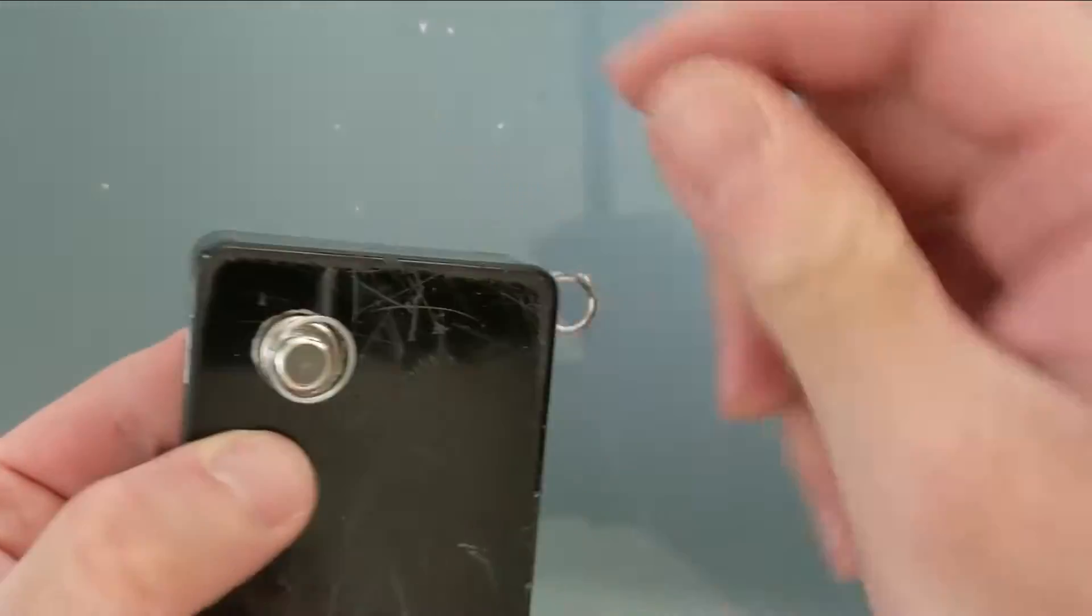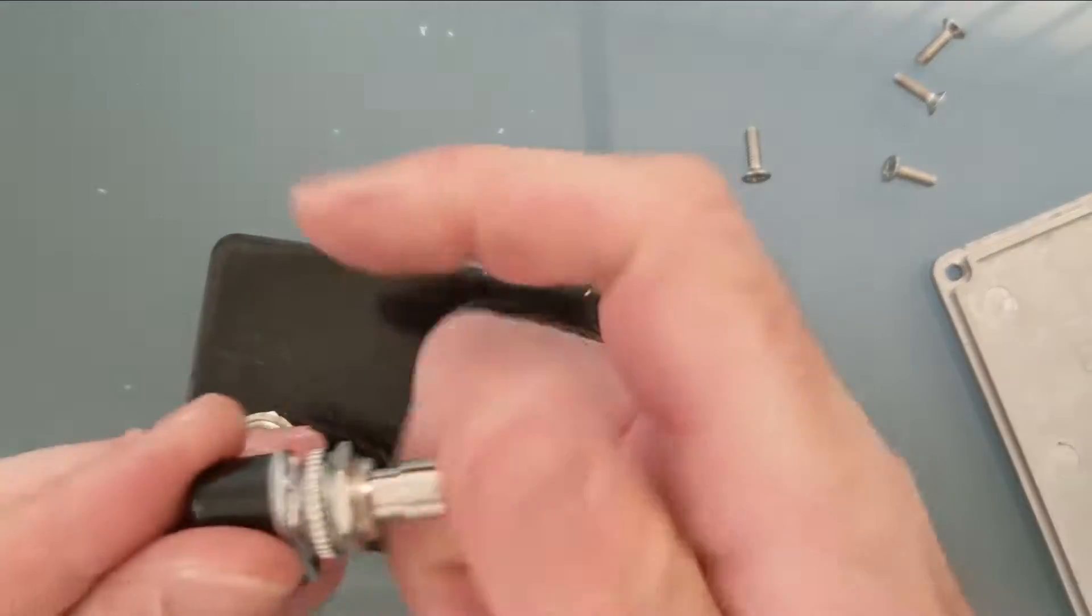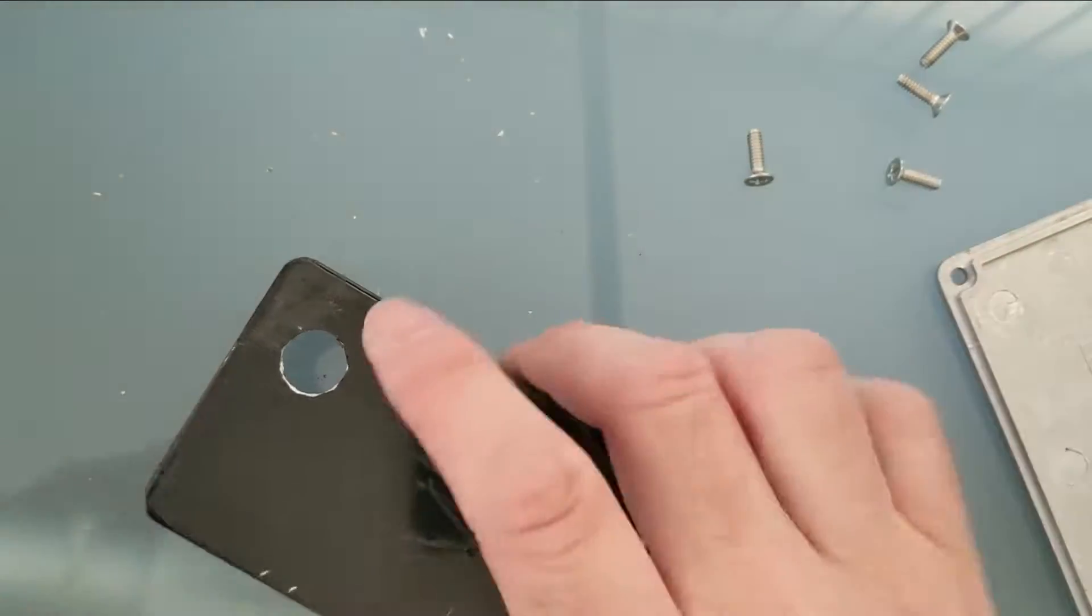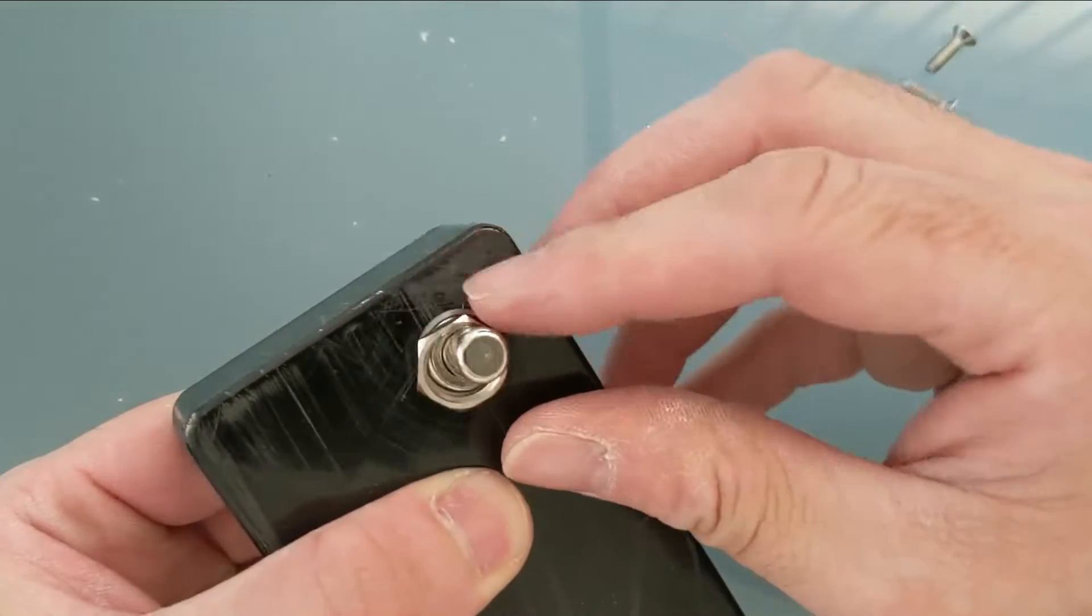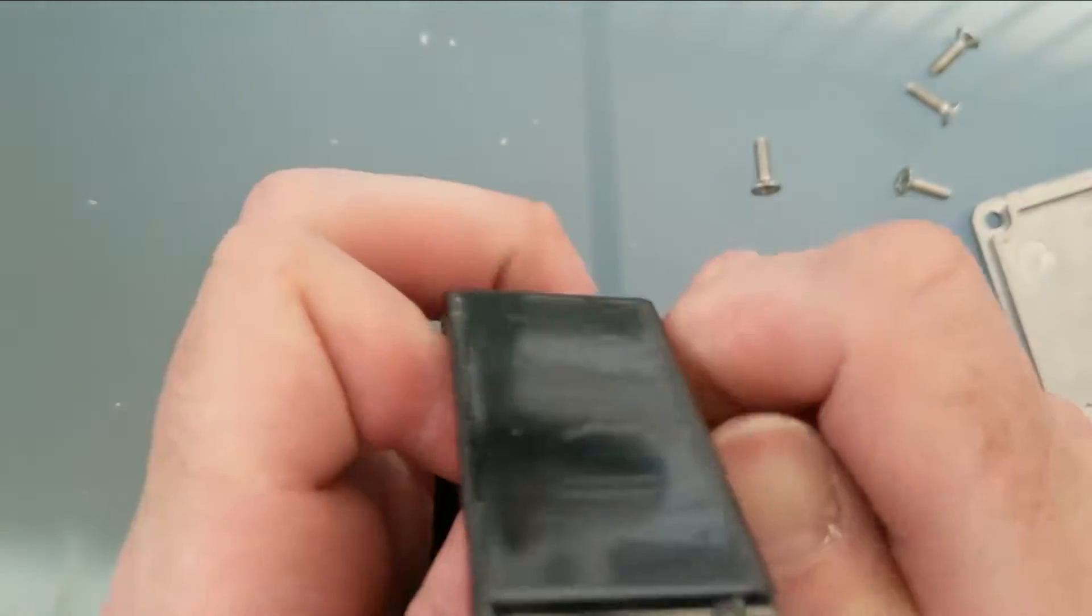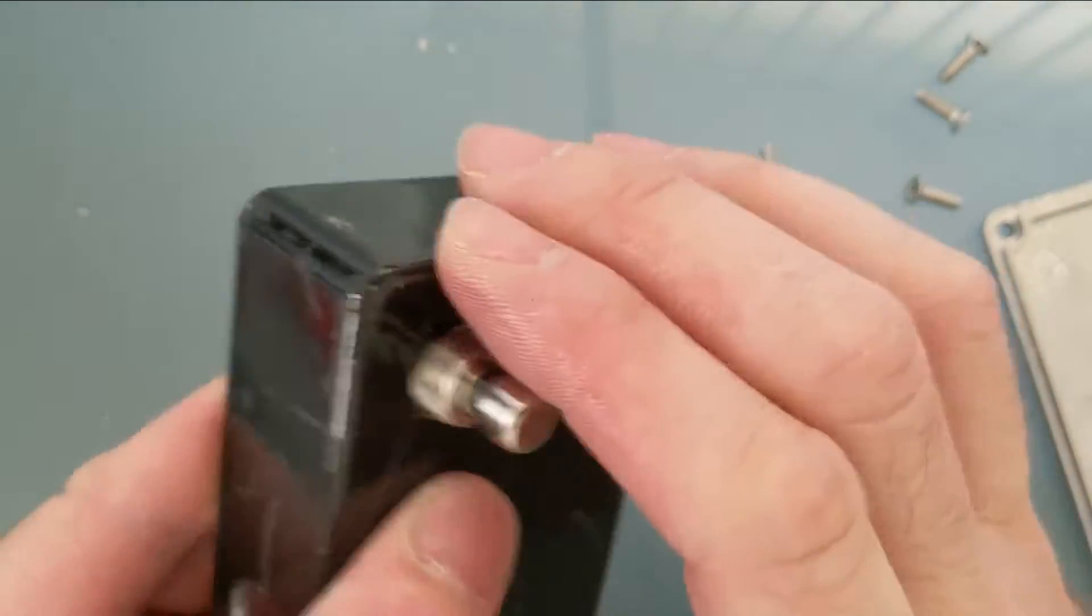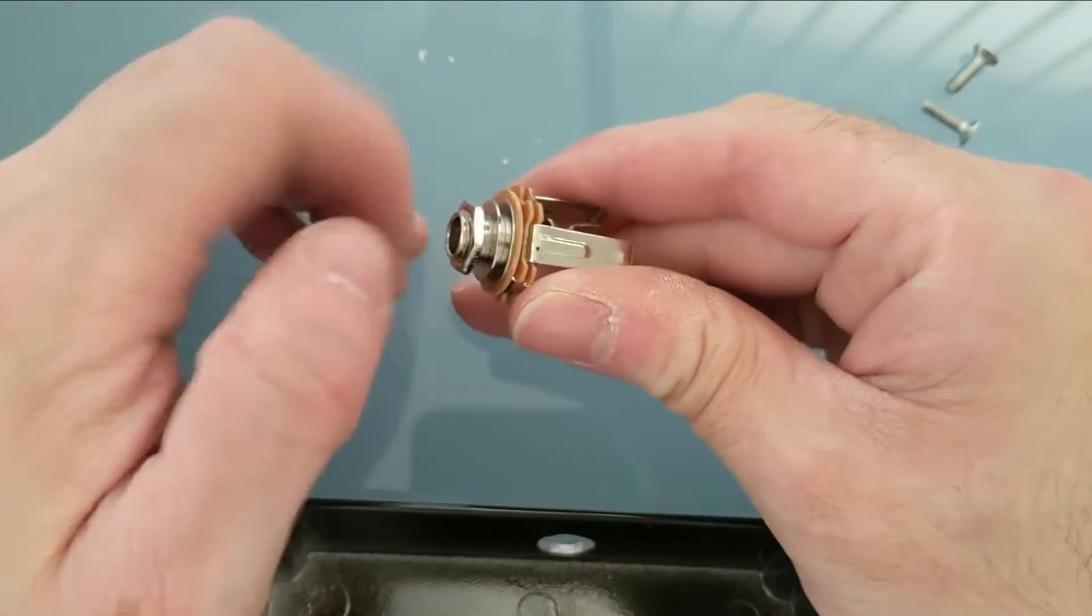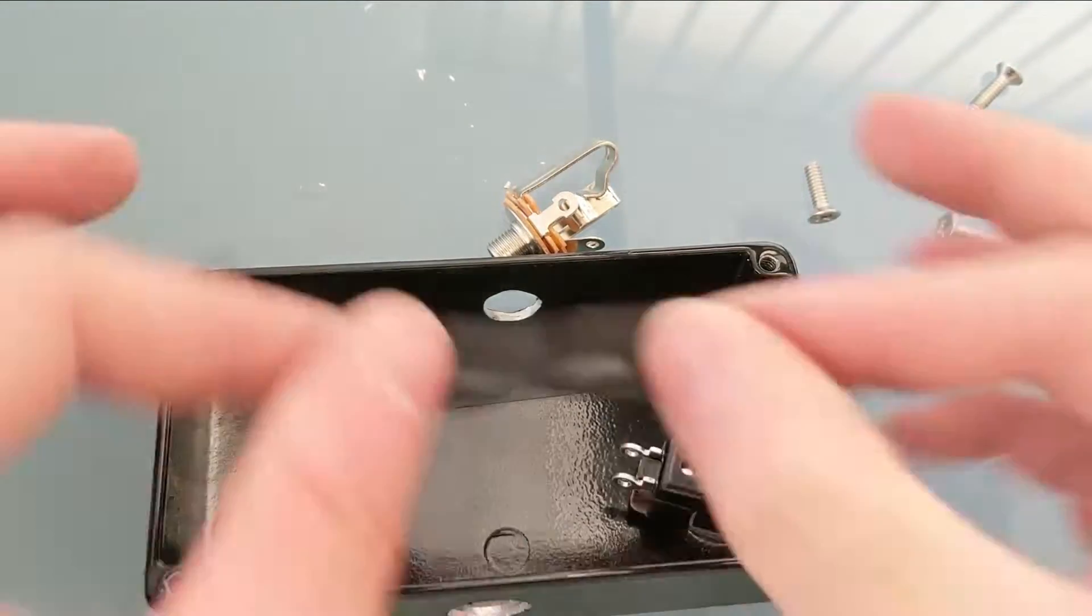With a hole in the right place, it's time for the final assembly. Here I'm making sure that the foot switches stick out the right amount. Here I'm going to use some electrical tape to make sure that the jack is isolated from the enclosure.